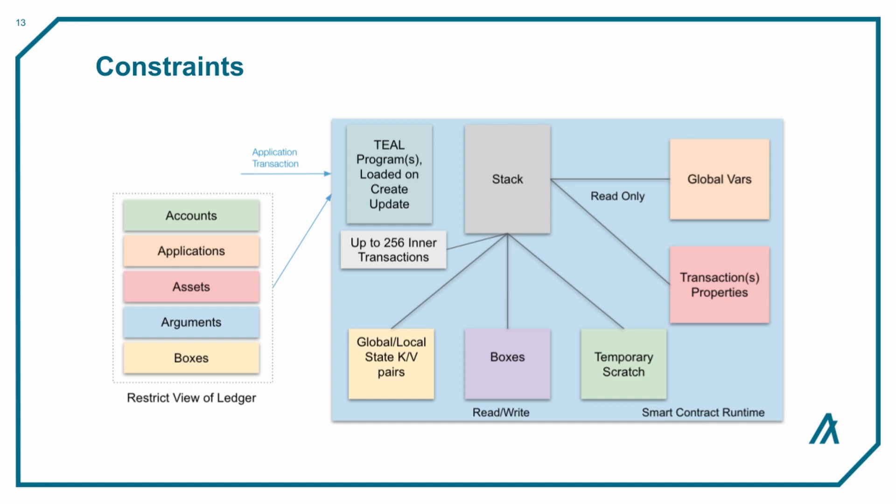For example, if a smart contract wants to read information about an asset, account, or application, the object in question must be predefined before execution. There is a limitation to how much state a single contract can access, which helps the node load the information into memory before execution to maintain quick block time.